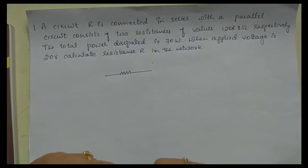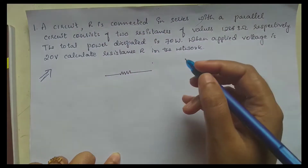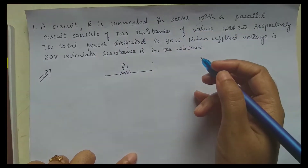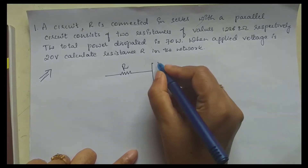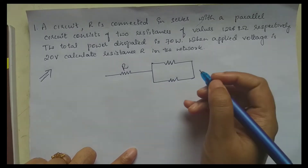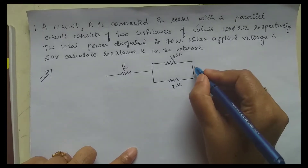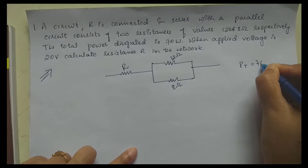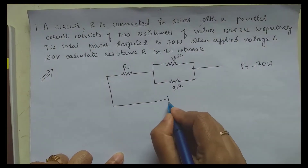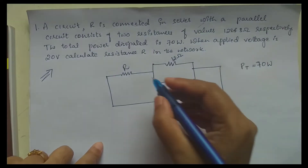As a solution, we'll draw the network first. R is connected in series with the parallel circuit, where the parallel circuit has two resistances of 12 ohm and 8 ohm respectively. The total power dissipated is 70 watts, and the applied voltage is 20 volts.